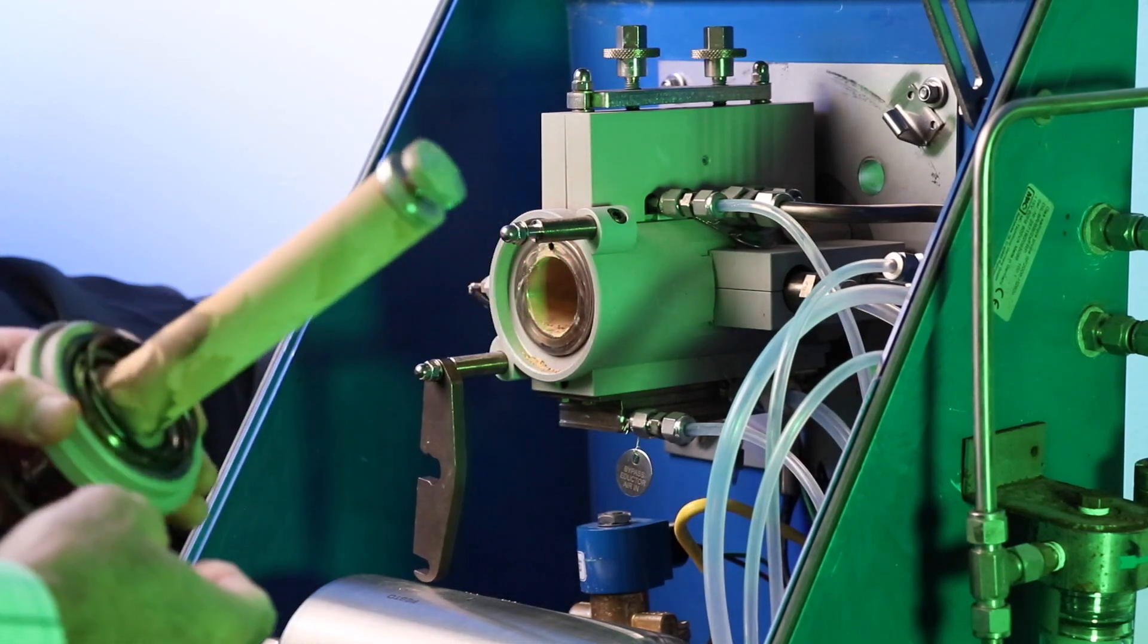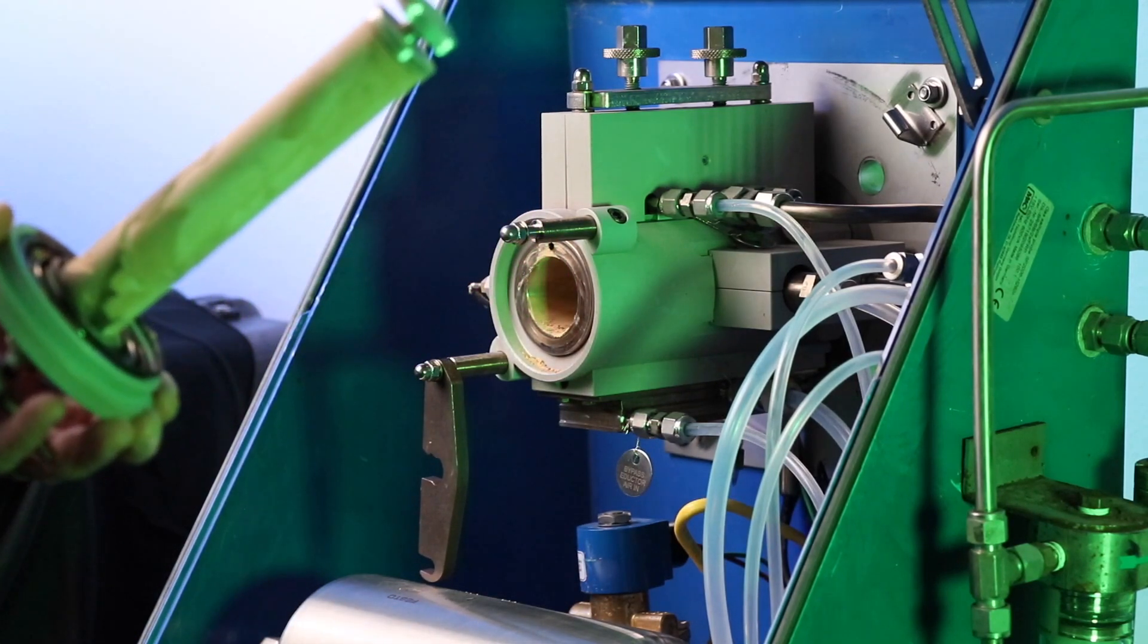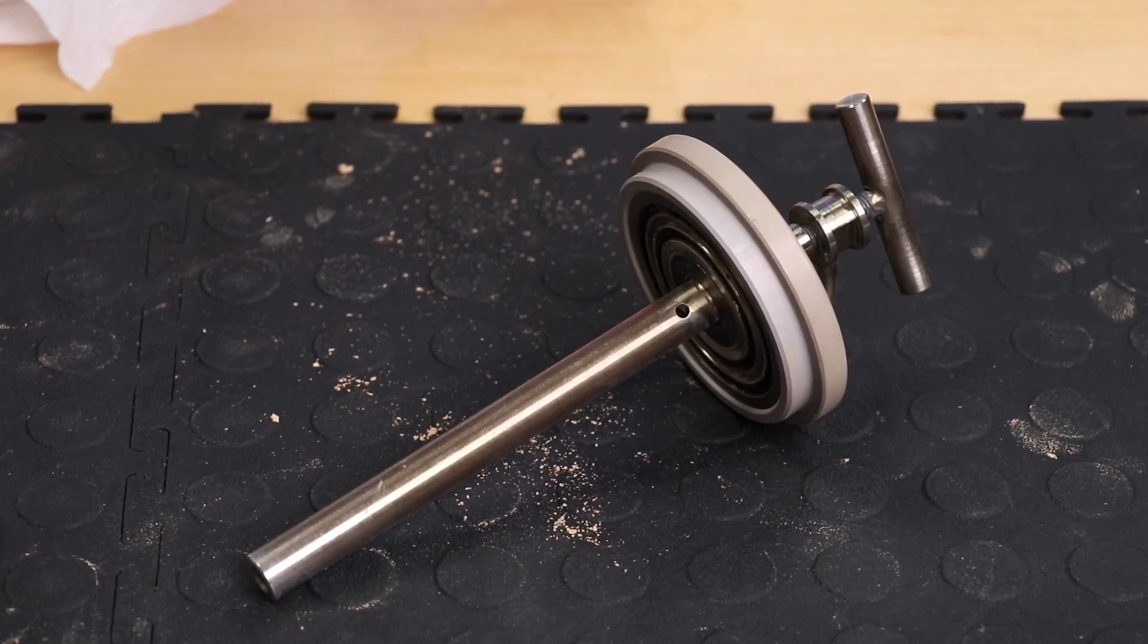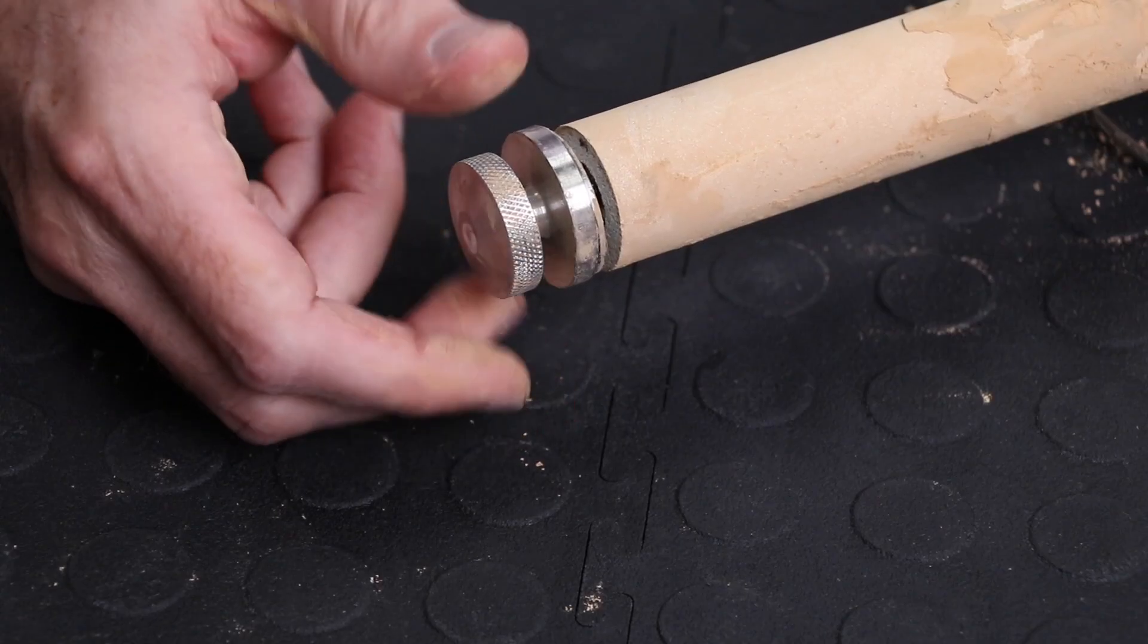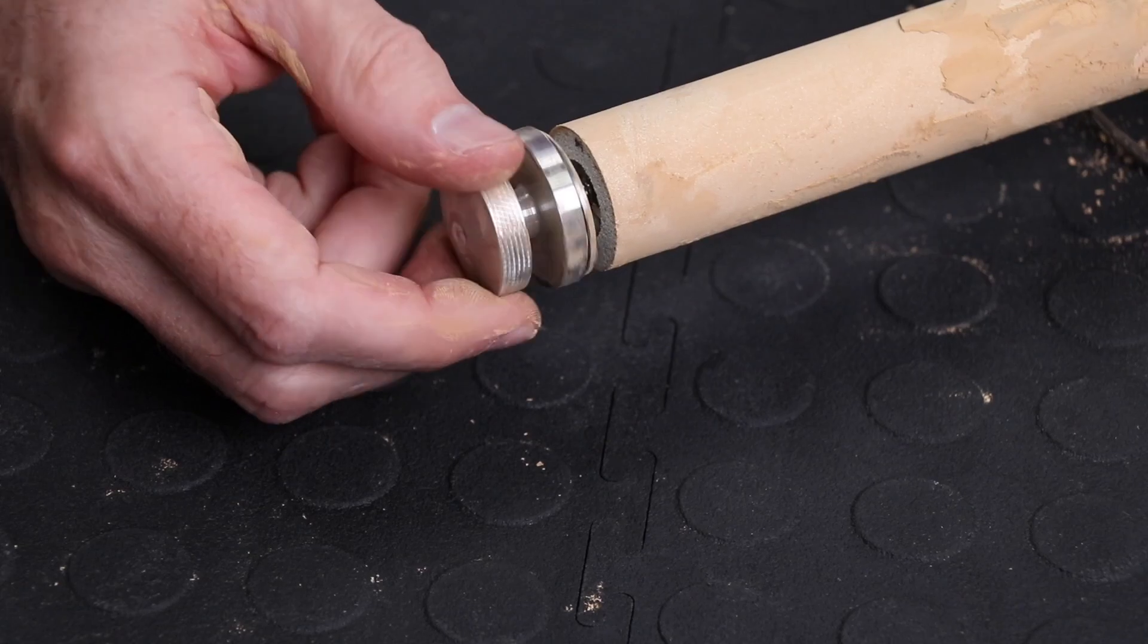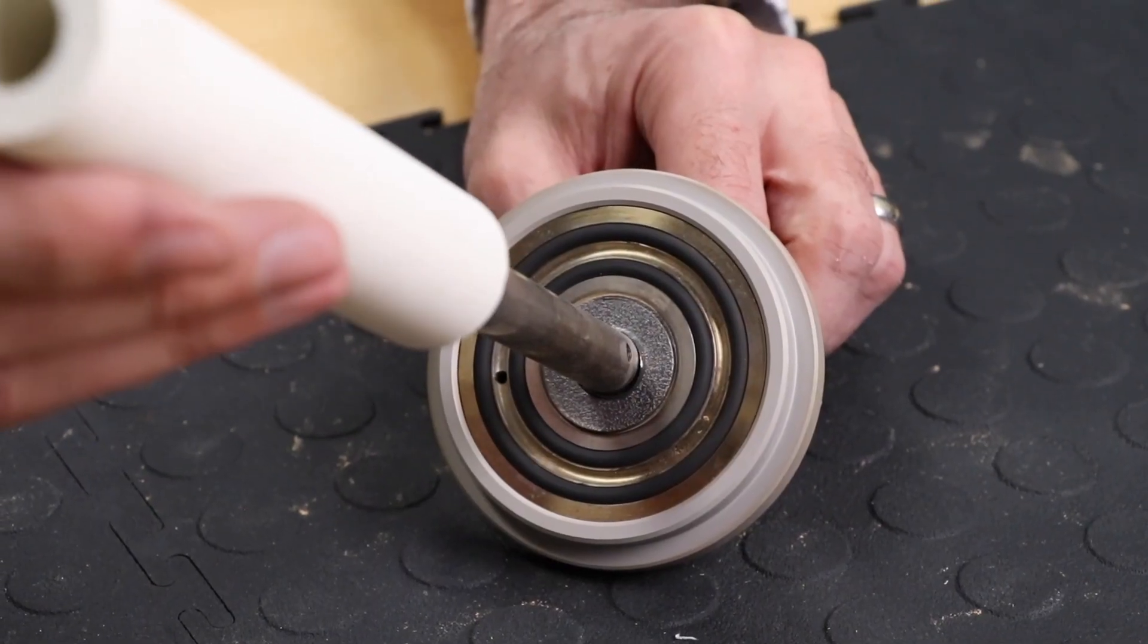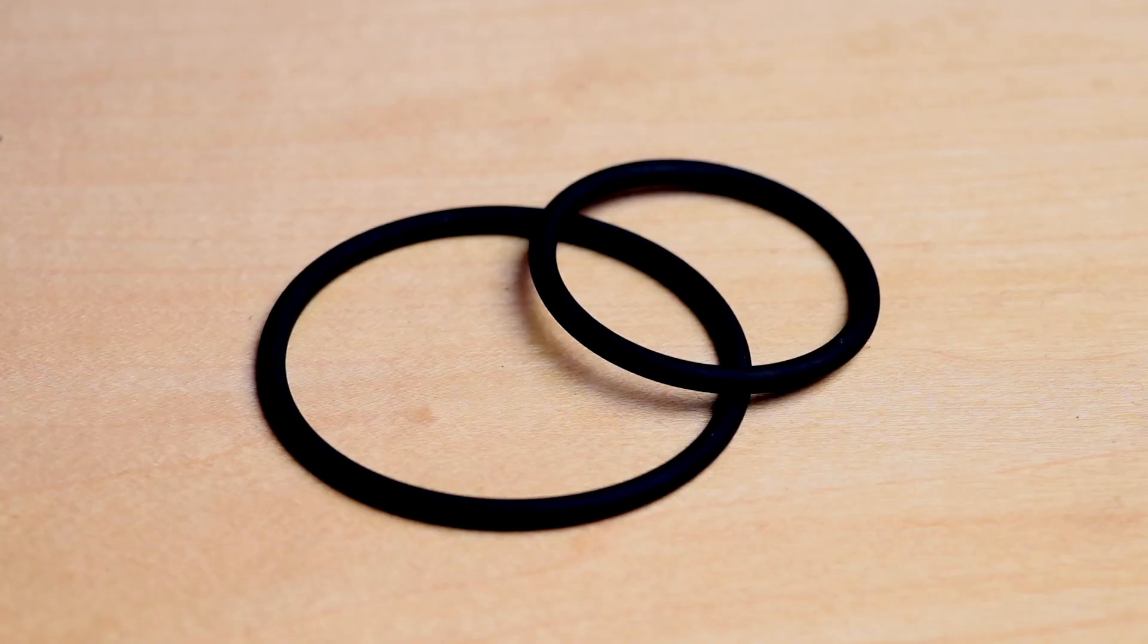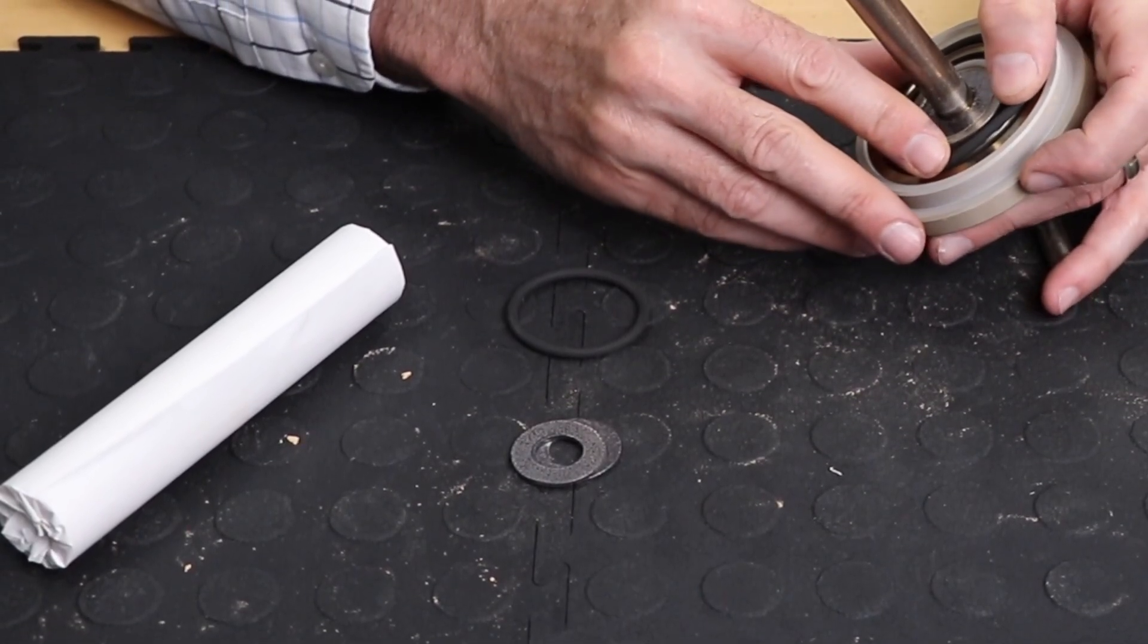You will now be holding the lid assembly. The lid assembly includes the filter lid, the knurled knob, the ceramic filter, two O-rings, and two filter gaskets.